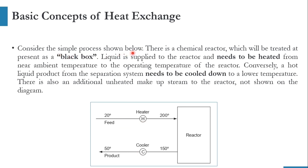Consider the simple process shown. There is a chemical reactor treated as a black box. Liquid is fed to the reactor and needs to be heated from near ambient temperature to the reactor's operating temperature. Conversely, a hot liquid product from the separation system needs to be cooled down. We are currently using utilities — a heating utility such as steam or furnace oil, and a cooling utility such as cooling water or air.